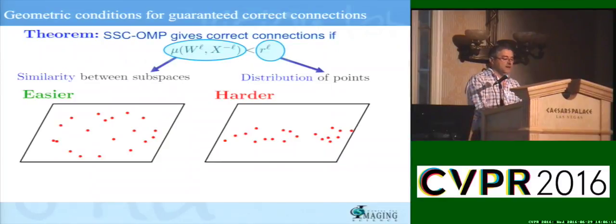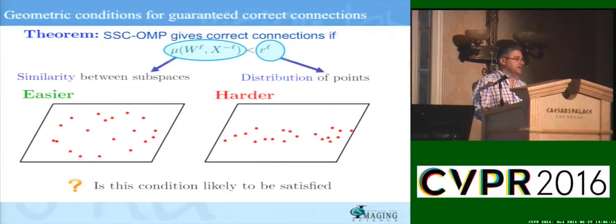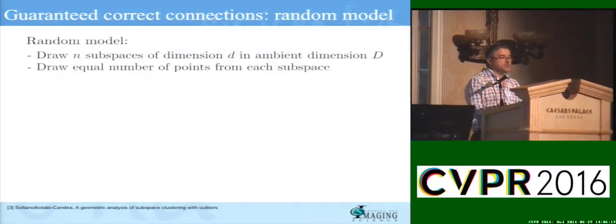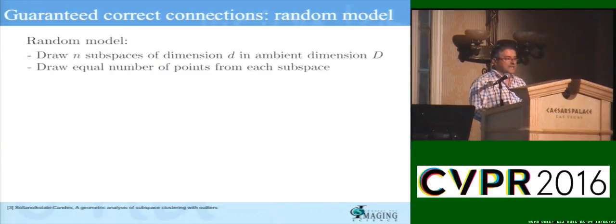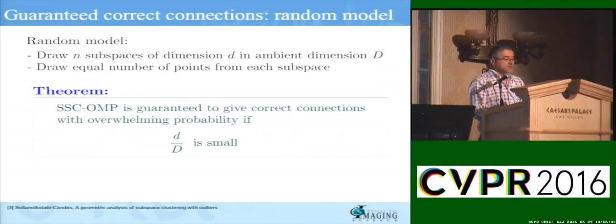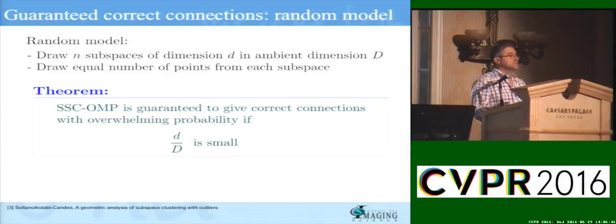But are these conditions satisfied in practice? To verify that, consider a random model where you draw n subspaces at random and then draw data from each subspace with equal probability. The theorem says that OMP is guaranteed to give the correct connections with overwhelming probability, going to one as the size of the data grows, provided simply that the subspaces are sufficiently low dimensional — that is, the dimension of each subspace is small compared to the dimension of the ambient space.